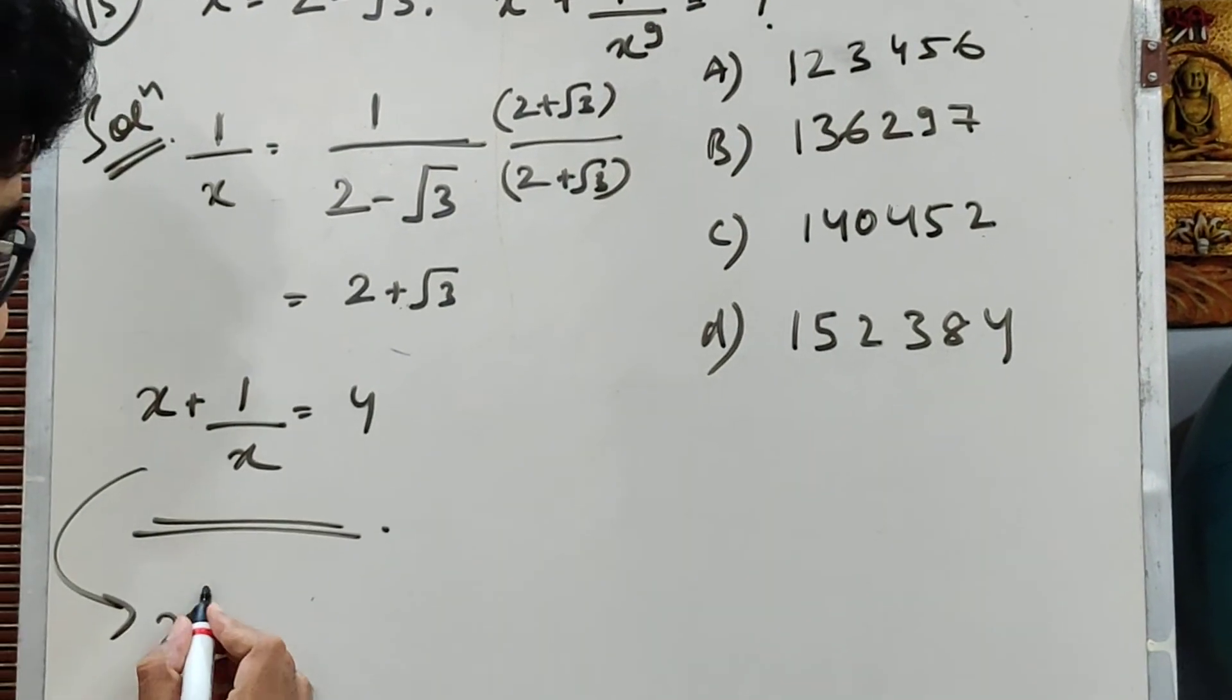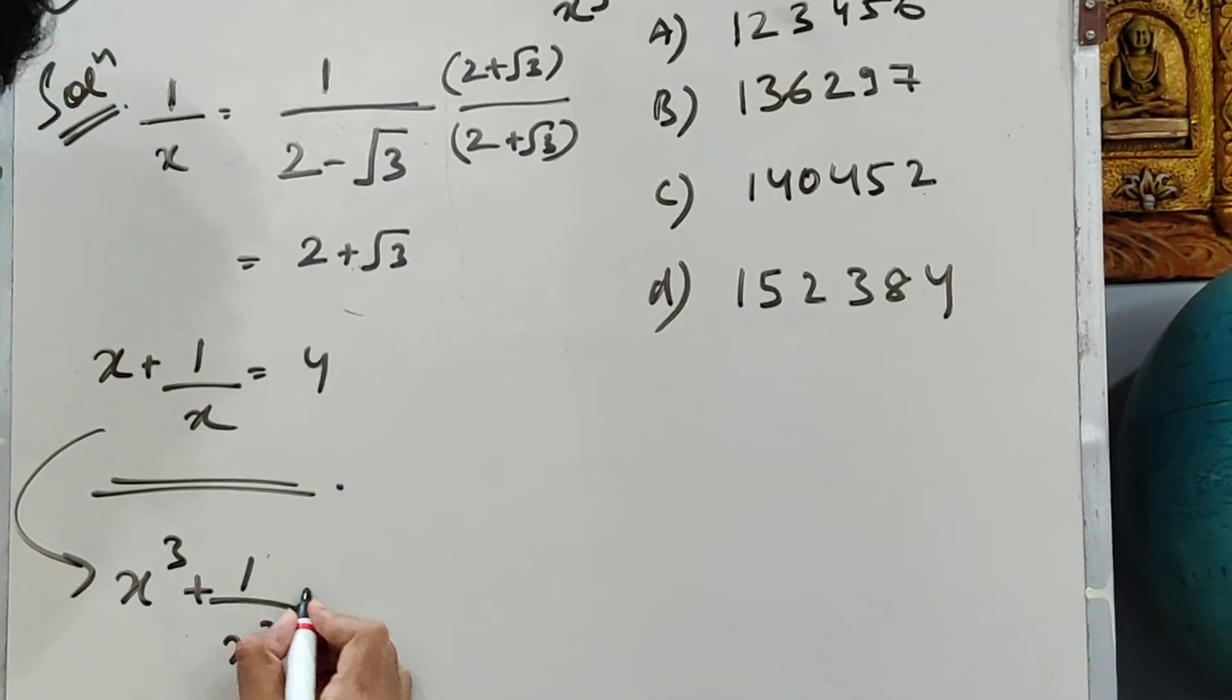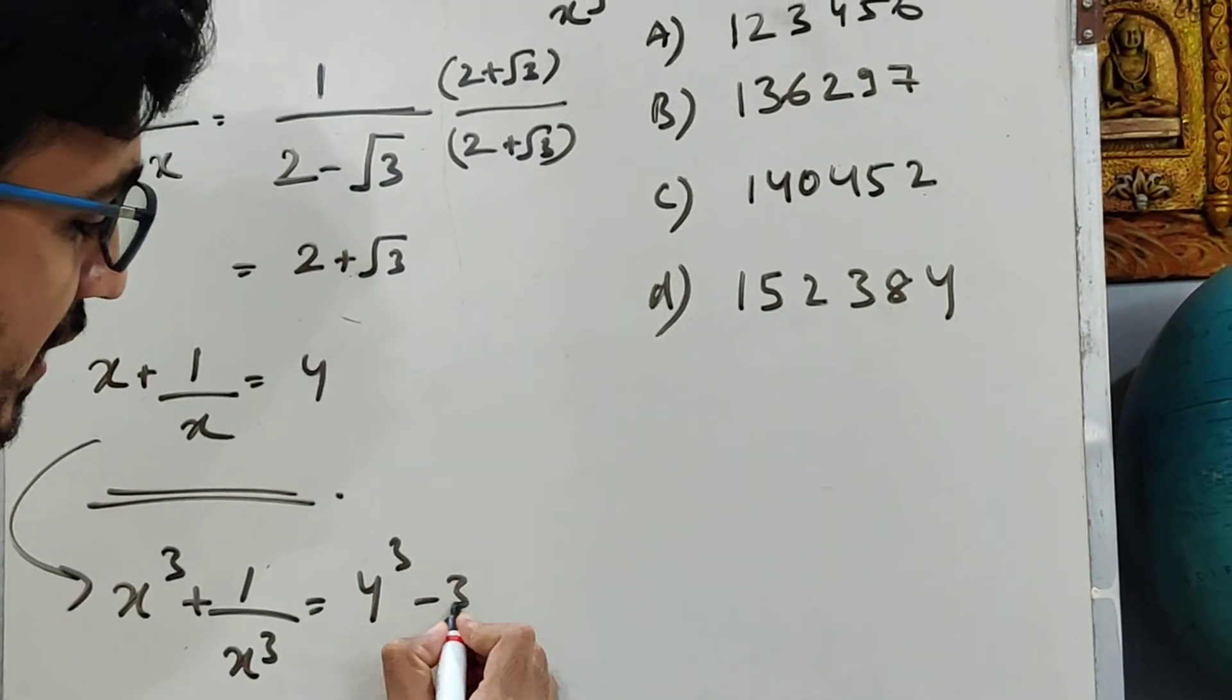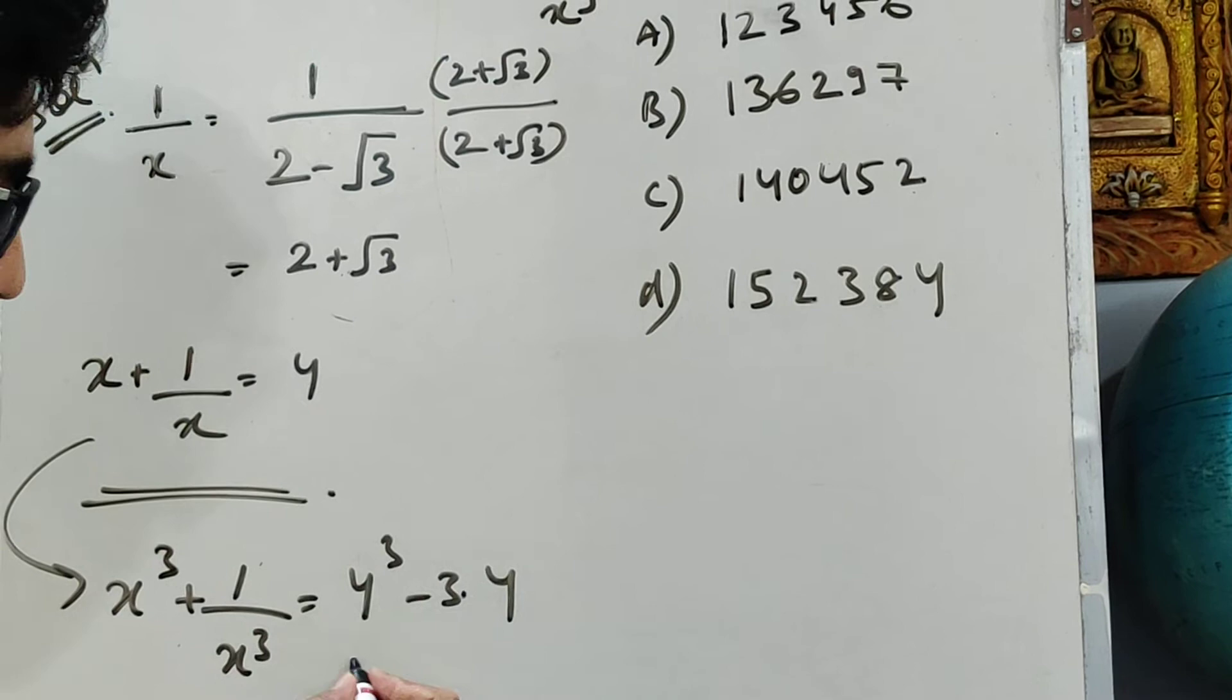First step, x cube plus 1 by x cube. This equals p cube minus 3p, which is 4 cube minus 3 into 4. So 64 minus 12, which is 52.